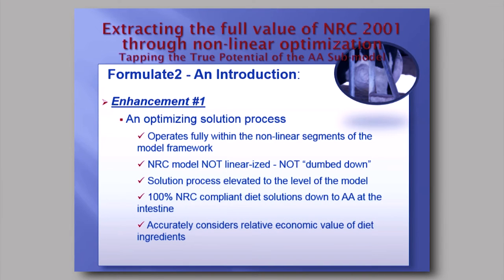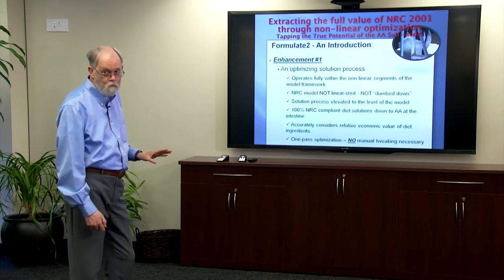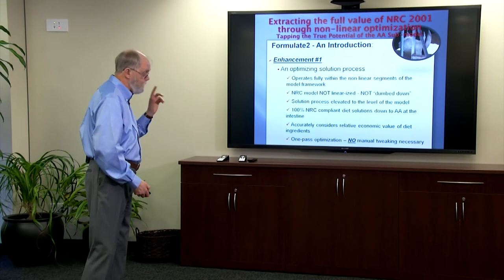You get 100% compliant solutions from Formulate 2 right down to amino acids in the intestine. You could take a diet formulated in Formulate 2, enter it into the evaluation software provided with the published model, line up all your forage analyses, and you would see the same amino acid flows. Because it's an optimizing solution process, it accurately considers the relative economic value of all ingredients with respect to amino acid constraints — giving us a one-pass solution. Set a constraint for 180 grams of lysine, 60 grams of methionine, and that's what you get the very first time through, with no manual tweaking.